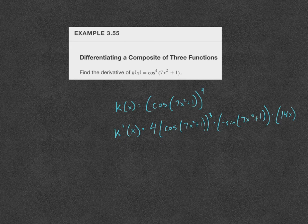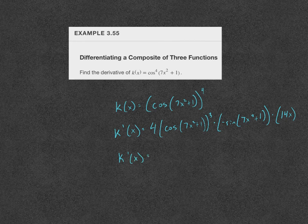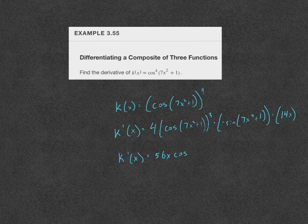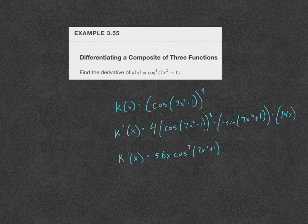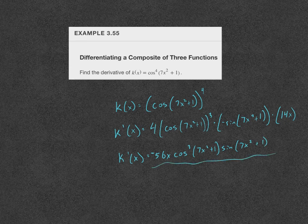Every time you take the derivative of something, what's inside the parentheses after it stays the same. Cleaning this up: k prime of x equals negative 56x times cosine cubed(7x² + 1) times sine(7x² + 1). That's the final answer. Some of these are more complicated, but as you work through the homework, you'll run into tough ones — just reach out and I can help you figure out how to take those derivatives.